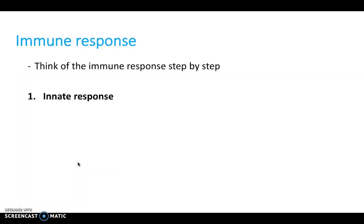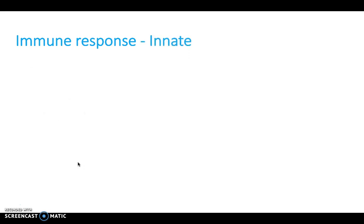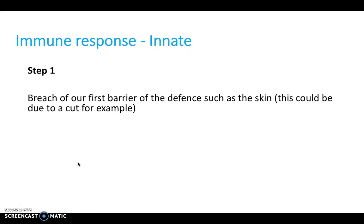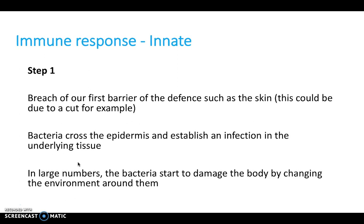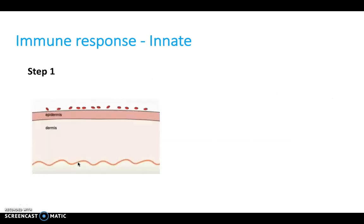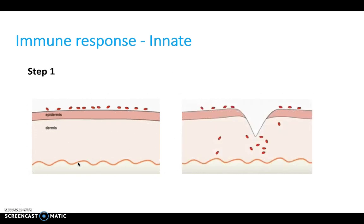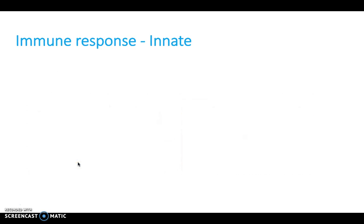Think of the immune response step by step — innate followed by adaptive. In step one of the innate response, there's a breach of our first barrier of defense such as our skin. For example, we could have a cut and bacteria crosses the epidermis and establishes an infection in the underlying tissue. In large numbers, the bacteria start to damage the body by changing the environment around them.